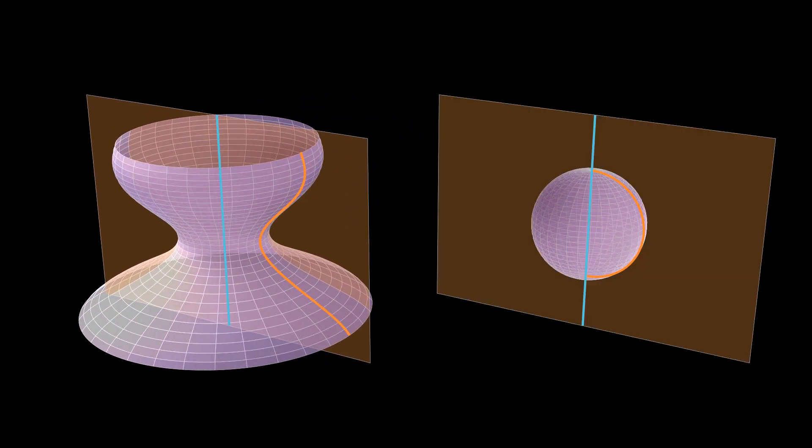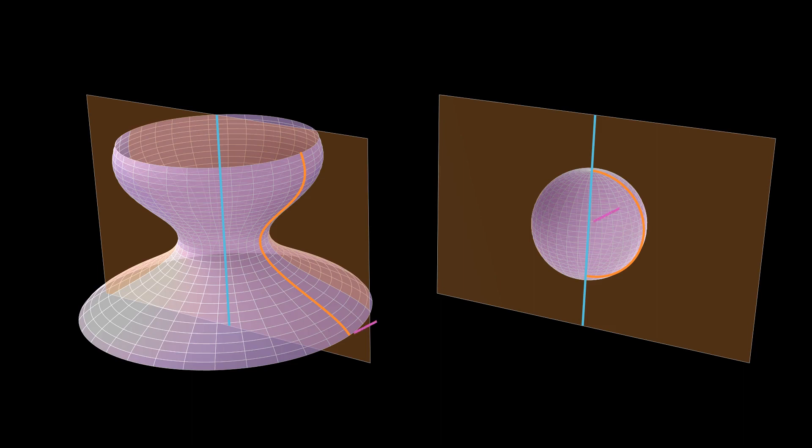When we look at the Gauss map restricted to that meridian, its image is contained in the intersection of the sphere with the corresponding plane. This implies that when we take the derivative of the Gauss map along a meridian, we get a vector tangent to such meridian. This is saying that the directions tangent to the meridians are eigenspaces of the shape operator.